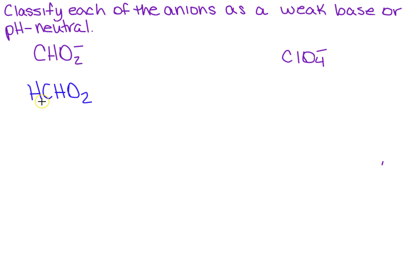So if I add hydrogen to CHO2, I don't recognize that as one of the strong acids that we've learned, correct? So this is considered a weak acid, and if it is a weak acid with H in front of it, that means that the anion is going to be a weak base.